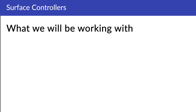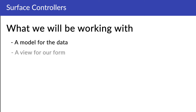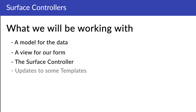Throughout this first chapter of the developer fundamentals series, I will show you how we can use surface controllers to create new content and media directly from the frontend of the Umbraco website. To achieve this, we will be creating a series of different components: a model for the data we will be working with, a view for our form, the main attraction of this chapter — the surface controller — and finally, we will be making some updates to some templates on the site.